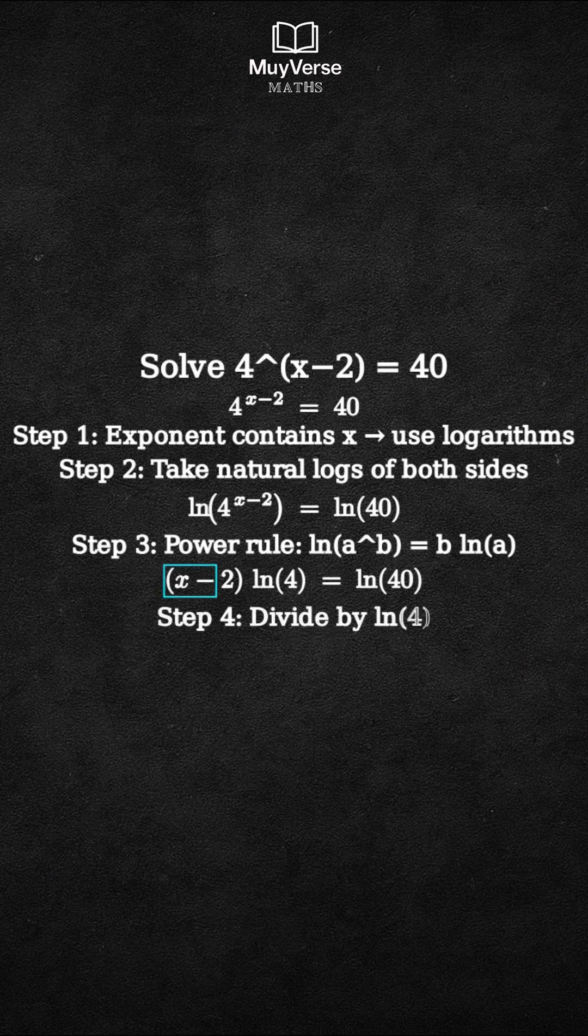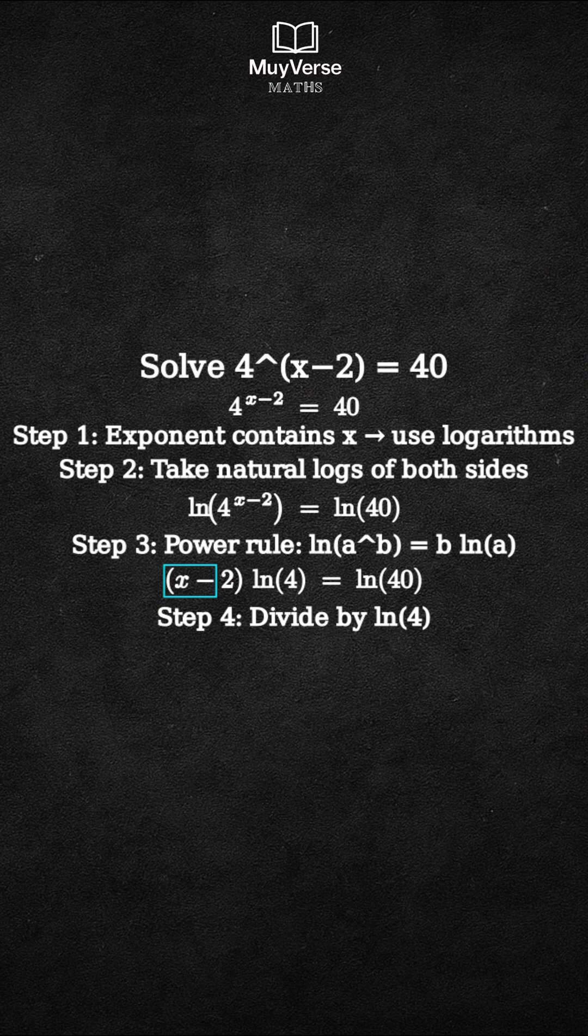Step 4: Solve for x minus 2 by dividing both sides by natural log of 4.